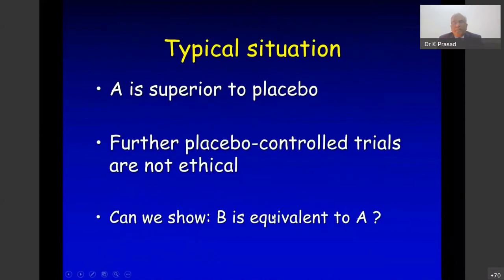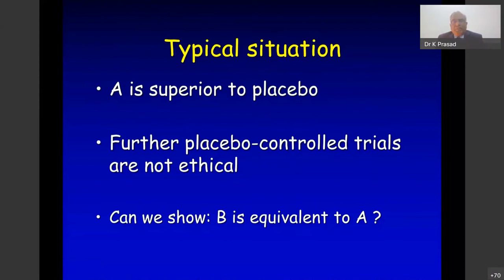A typical situation is that you have drug A, which is known to be superior to placebo and is the standard of care treatment. Because it is standard of care, you cannot do further placebo-controlled trials — they are not ethical. The alternative is: can we show that B, the new treatment, is equivalent to A, the standard treatment? If we can show B is equivalent to A, we can assume B is also better than placebo.